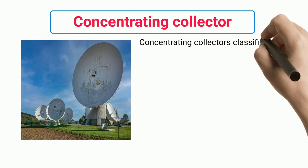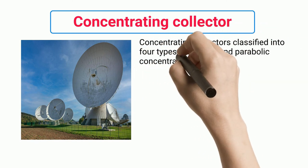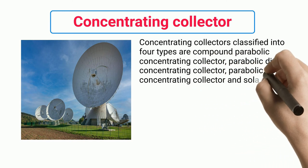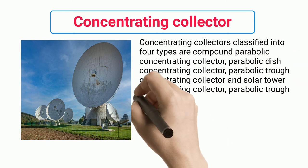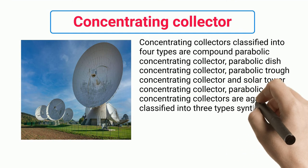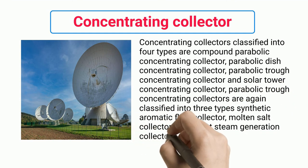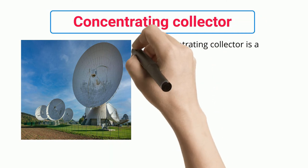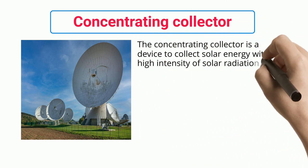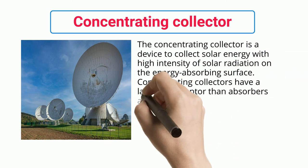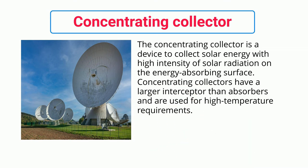Concentrating collectors are classified into four types: compound parabolic concentrating collector, parabolic dish concentrating collector, parabolic trough concentrating collector, and solar tower. Solar tower concentrating collectors are further classified into synthetic aromatic fluid collector, molten salt collector, and direct steam generation collector. A concentrating collector collects solar energy with high intensity of solar radiation on the energy-absorbing surface. Concentrating collectors have a larger interceptor than absorbers and are used for high-temperature requirements.